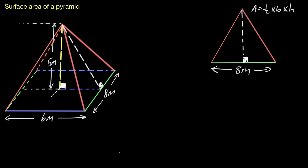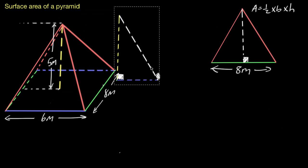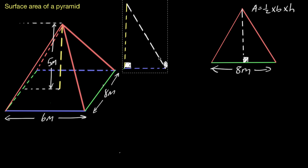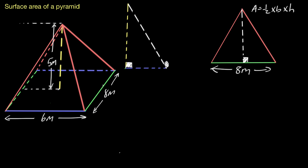I'm going to take that triangle and bring it out so we can work on it. Let's put some values on it. We know it's five meters high, and we just saw that half of six is three meters. So we now need the value of that hypotenuse.